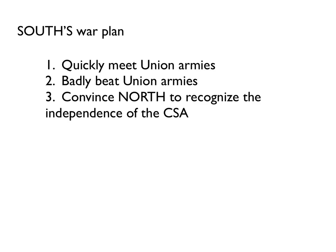The South's plan was different — really pretty basic. Rush out there and quickly meet Union armies, beat them as badly as you can, and by doing that, convince the North that the best thing to do was to recognize the independence of the Confederate States of America. There wasn't any great plan to invade the North. The South knew it would be lucky if it could just keep the North out of the South. The idea was to find them, meet them, beat them — again and again — and convince the North to recognize the Confederacy as a new country.